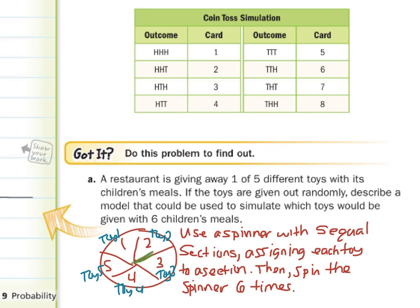Then spin the spinner six times to match the six children's meals. And who knows? We could have a lot of twos, we could have a lot of threes, or it could be equally distributed. You don't know until you simulate it.